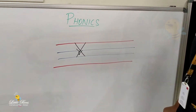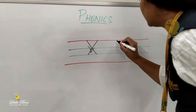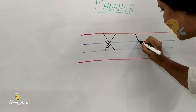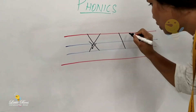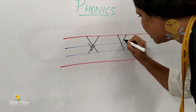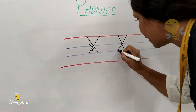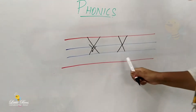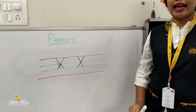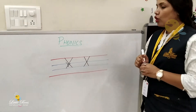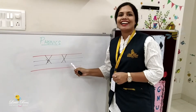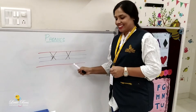Shall we write again? Start from the red line till the second blue line. From the red line to the second blue line. This is letter X. What is this? This is letter X.